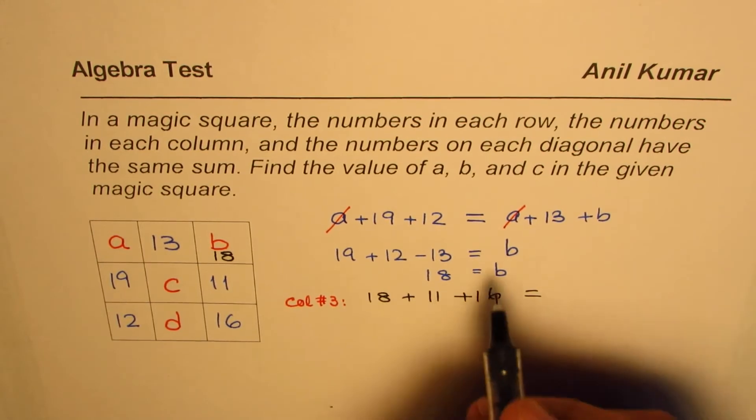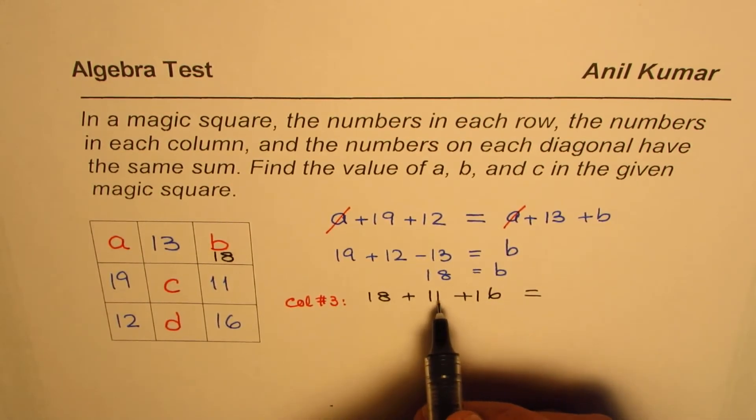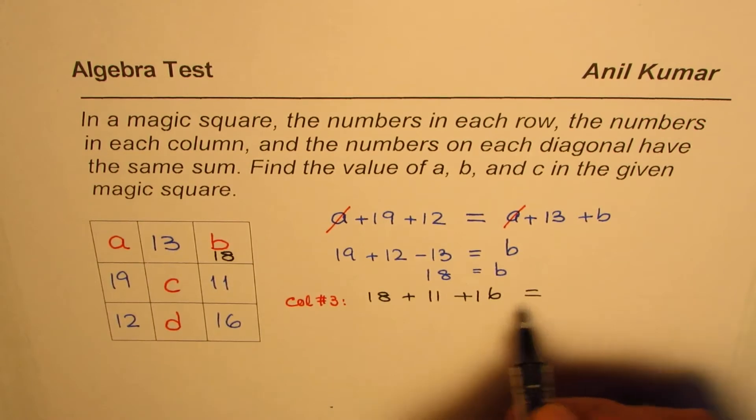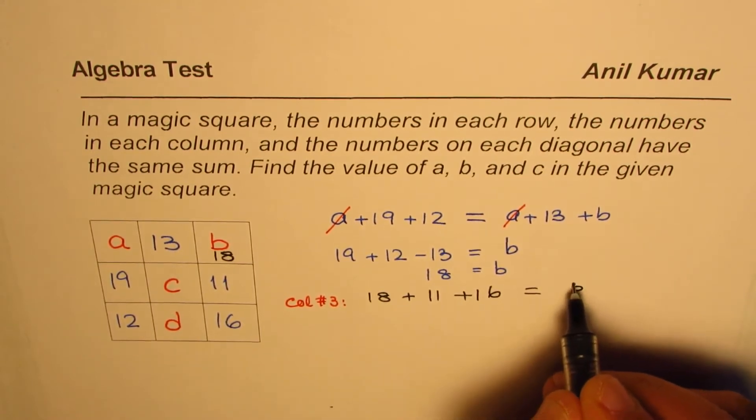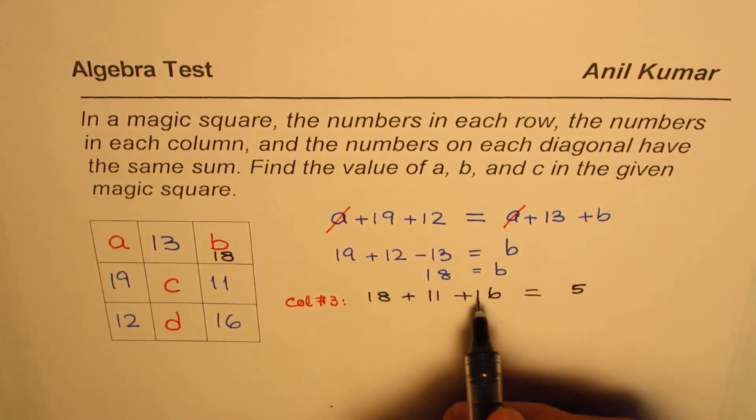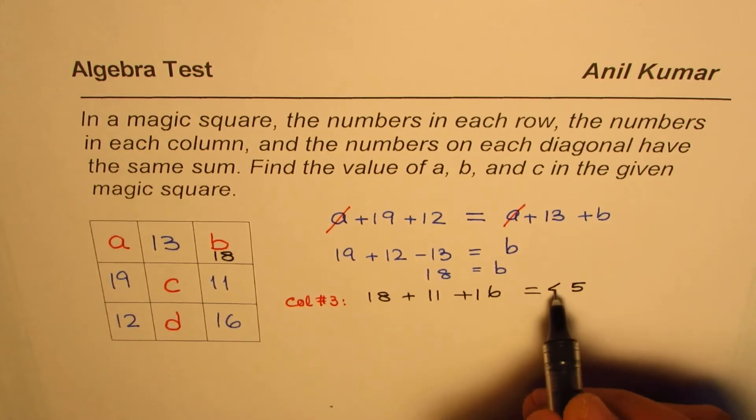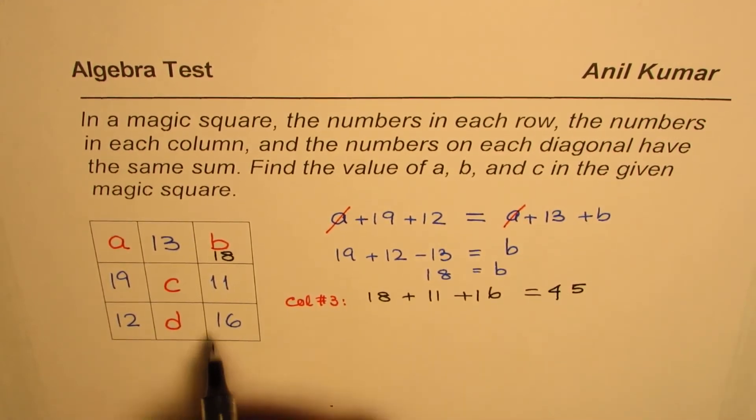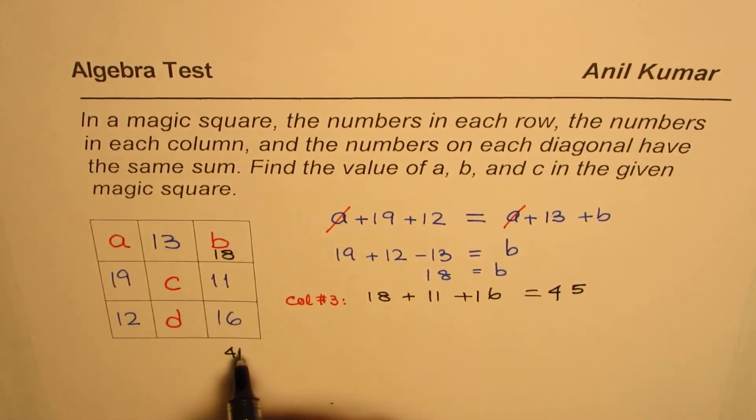Adding these numbers: 8 plus 1 is 9, 9 plus 6 is 15. 5 plus 1 is 6, plus 1 is 7, plus 1 is 8, gives us 45. So that means the sum of this column is 45.